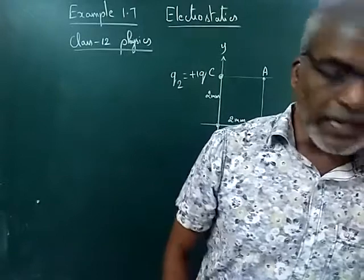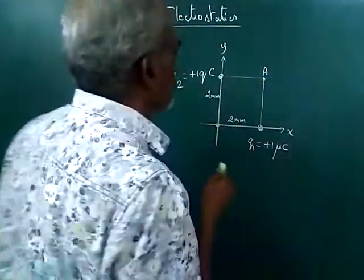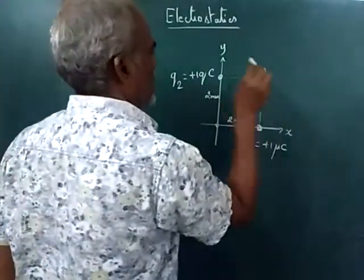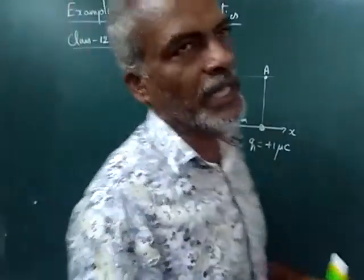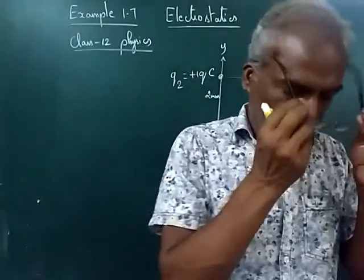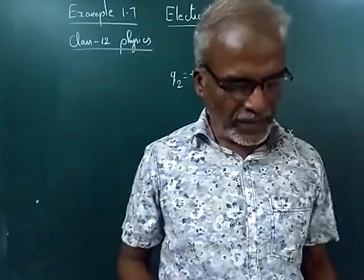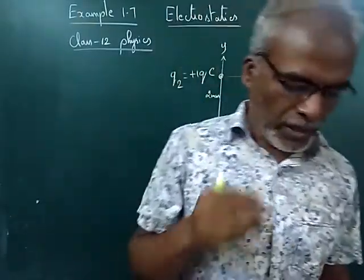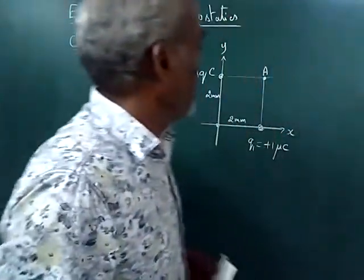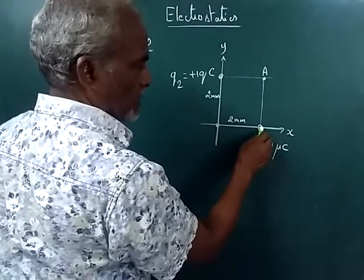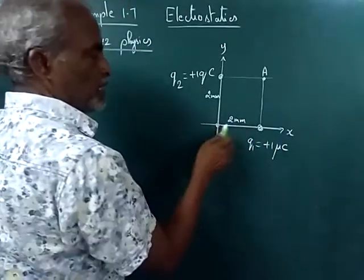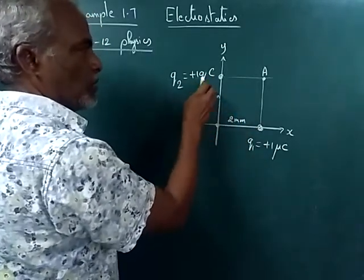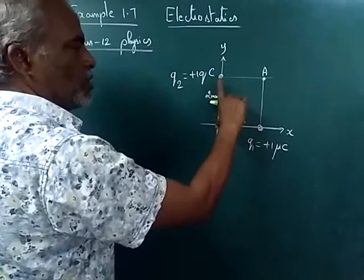This is the electric field at point A, and the electron experiences acceleration. So the question is to find these two things. Now, q1 charge is on the x-axis, at a distance of 2 mm from the origin. And q2 charge is also there — that is plus 1 micro Coulomb — on the y-axis, at a distance of 2 mm from the origin.